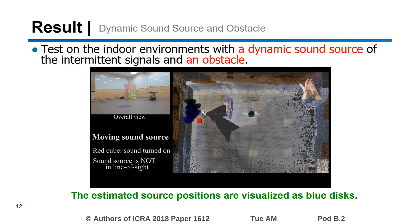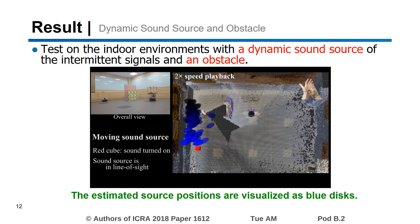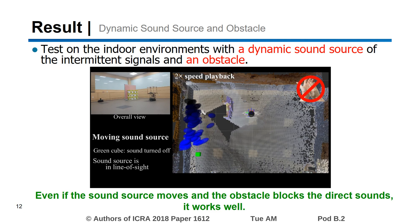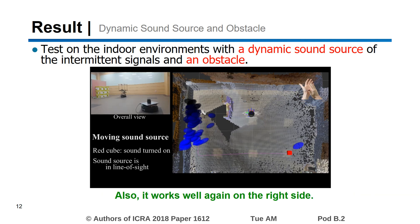The estimated source positions are visualized as blue disks. Even if the sound source moves and the obstacle blocks the direct sounds, it works well. It also works well again on the right side.